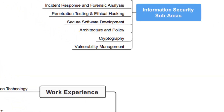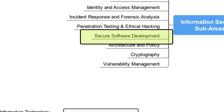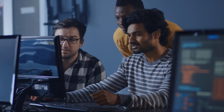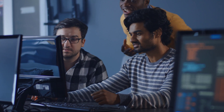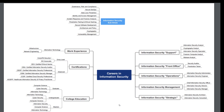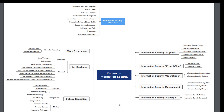I have not listed out the software development area, and that is for a good reason. Software development is usually done in other ways — it's not run under the information security umbrella. You would be part of a normal software development team, potentially with some more information security specific items in your role. If you're interested, I would start with looking into software development itself so that you are a really experienced software developer, and then go after software development from an information security perspective.